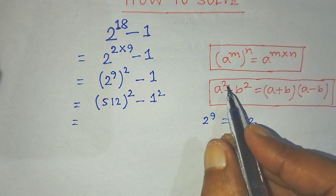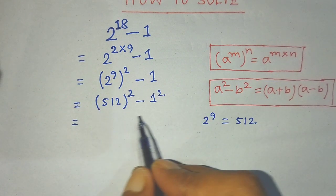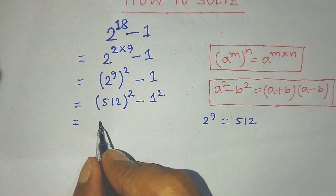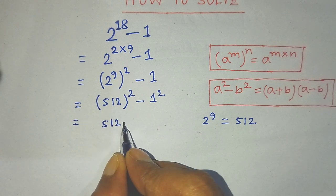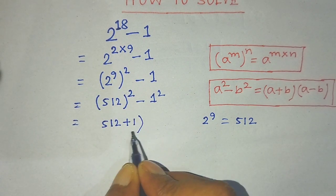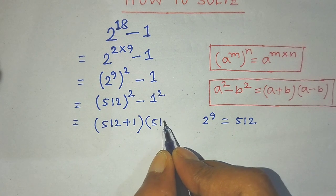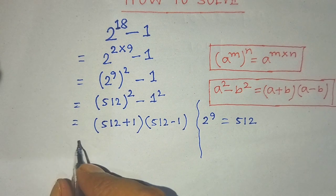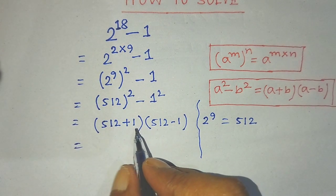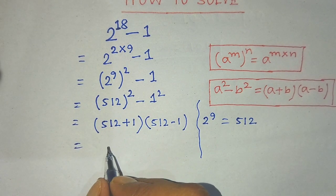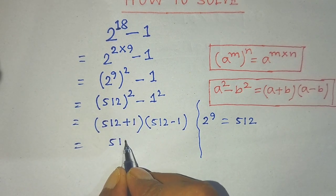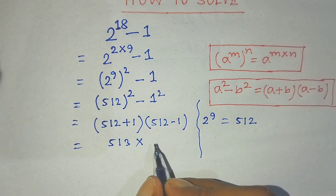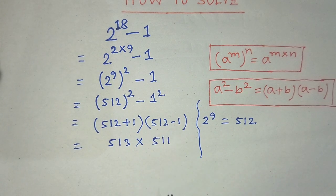After that, we apply the a square minus b square formula, so we can write 512 plus 1 into 512 minus 1. If you add 1 with 512 you get 513, and 512 minus 1 gives 511.